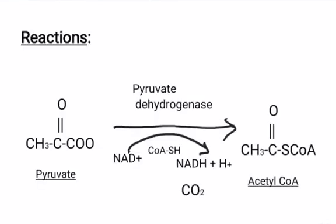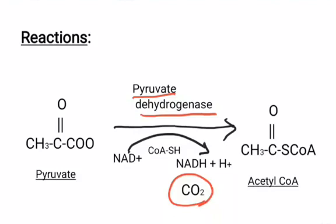Let us have a look at the reactions of the Krebs cycle. First, pyruvate — the end product of glycolysis — in aerobic conditions, in the presence of the enzyme pyruvate dehydrogenase, gets converted into acetyl CoA. Here, CO2 is liberated.